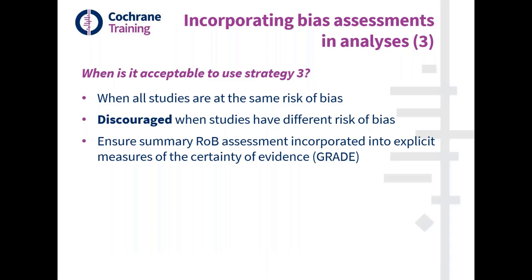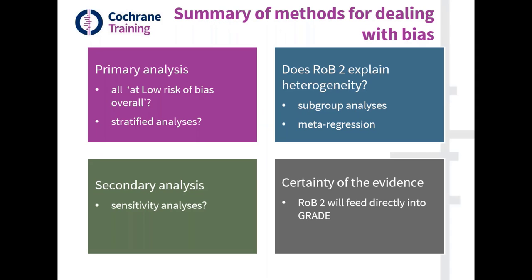To summarize all three methods: once authors have completed risk of bias assessments and presented them in a suitable format, they decide what should be included in the primary analysis. The two mainstay approaches are restricting to lower risk of bias studies and stratified analysis. Subgroup analysis and meta-regression can help explore differences in estimates by subgroup. A sensitivity analysis may also be useful, especially if restricting to lower risk of bias studies. Finally, the overall risk of bias across studies in the primary synthesis outcome will feed directly into GRADE assessment of certainty of evidence — showing how everything links together.